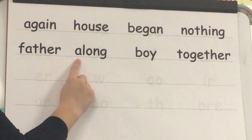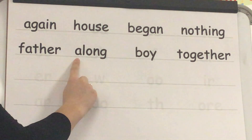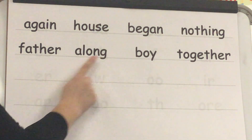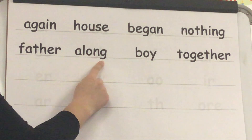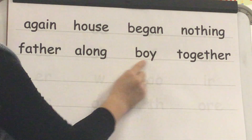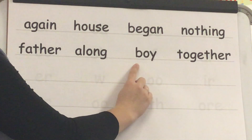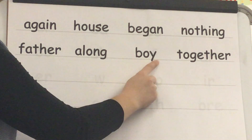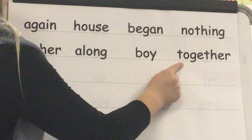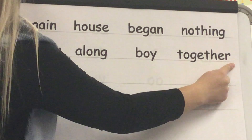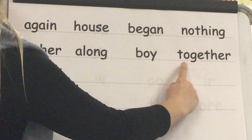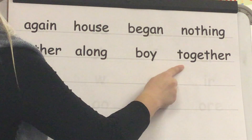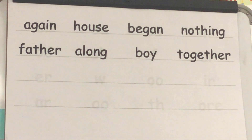This word is along. What word? Along. Spell along: A-L-O-N-G. Word? Along. Yes, along. This word is boy. What word? Boy. Spell boy: B-O-Y. Word? Boy. Yes, boy. This word is together. What word? Together. Spell together: T-O-G-E-T-H-E-R. Word? Together. Yes, together.